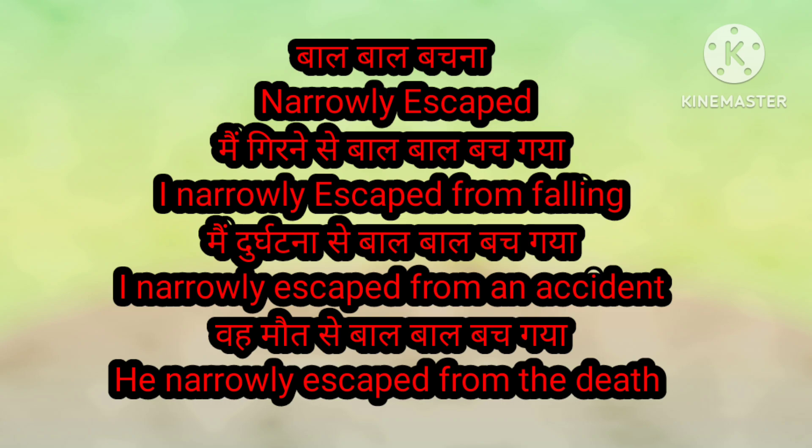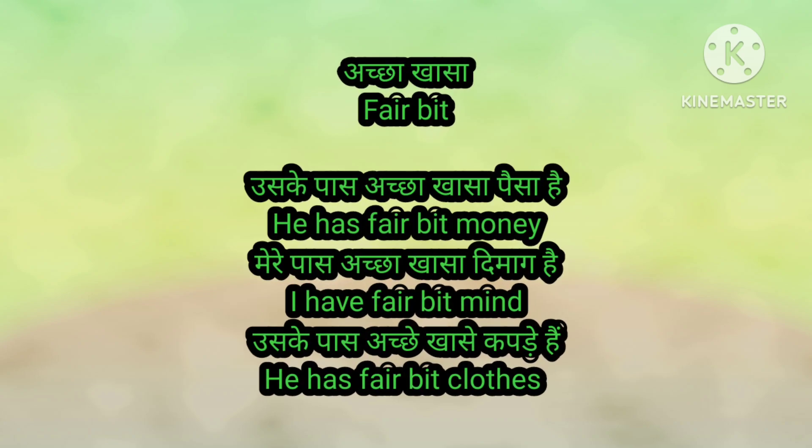The next structure is अच्छा खासा. उसके पास अच्छा खासा पैसा है, मेरे पास अच्छा खासा दिमाग है, उसके पास अच्छे खासे कपड़े हैं. For अच्छा खासा, we use 'fair bit' in English. He has a fair bit of money. I have a fair bit of brains. He has a fair bit of clothes. For अच्छा खासा, you have to use 'fair bit', and in the same way you can make all sentences.